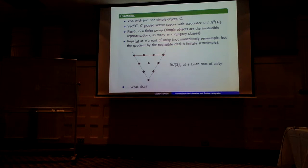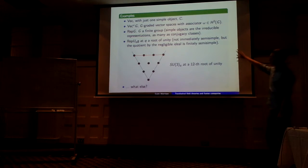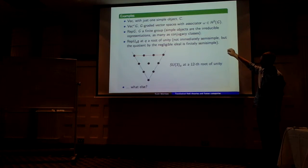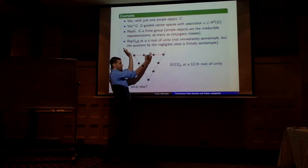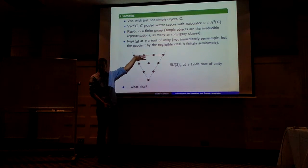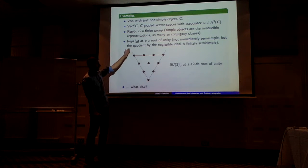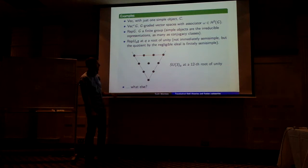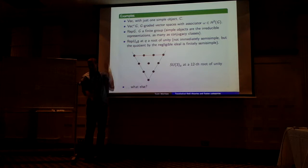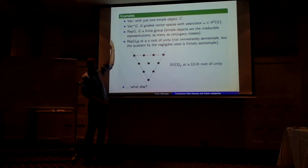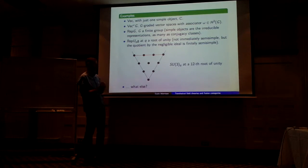Let's look at some non-examples first. Representations of a finite group over a finite field typically won't be semi-simple, so you don't like those. Representation categories of compact Lie groups are semi-simple but have infinitely many simple objects, so they're out too. The actual examples — the classical fusion categories — include: the category of vector spaces (just one simple object, the complex numbers); G-graded vector spaces twisted by some cohomological data; the representation category of a finite group (simple objects are the irreducible representations, and there are finitely many); and more exciting ones coming from quantum groups at roots of unity, where the irreducible representations are cut off to finitely many.